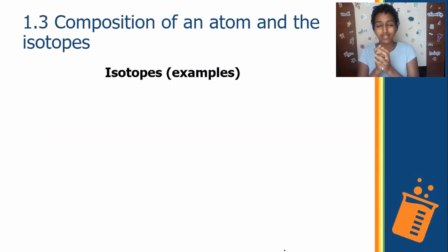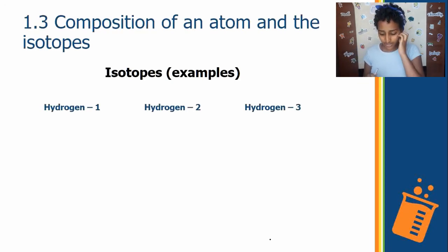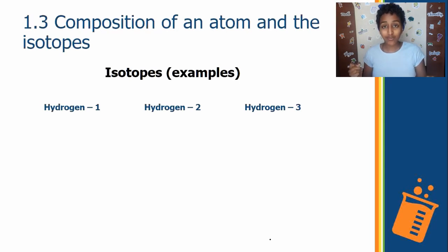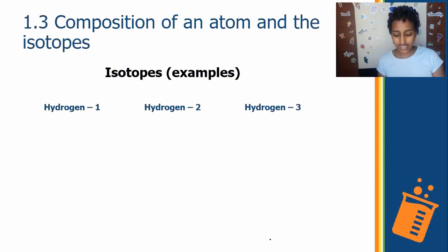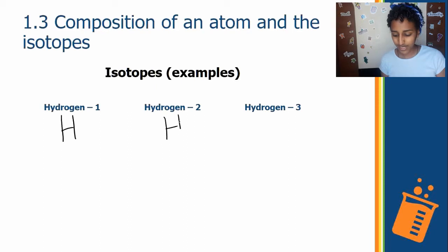Let's go through examples of isotopes. Here we have three isotopes of hydrogen: hydrogen-1, hydrogen-2, and hydrogen-3. The shorthand for writing mass number and atomic number: hydrogen-1 means the mass number is 1, and the symbol for hydrogen is H. We write H for each of the three.